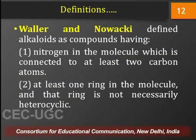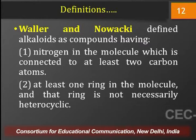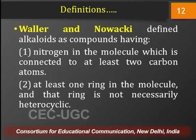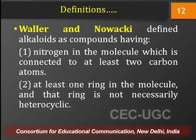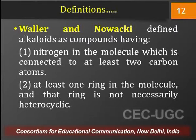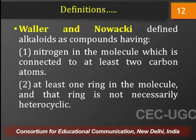Waller and Nowacki defined alkaloids as compounds which have nitrogen in the molecule connected to at least two carbon atoms — specifying that the nitrogen atom should be at least secondary in nature. The alkaloids should have at least one ring in the molecule, and that ring is not necessarily heterocyclic. Here they try to cover both types of alkaloids: those having nitrogen in their heterocyclic ring as well as those having the nitrogen outside the heterocyclic ring, though they are silent about the biological activity or basic nature of these compounds.